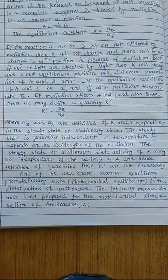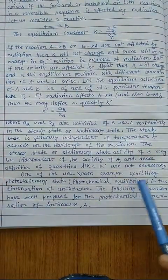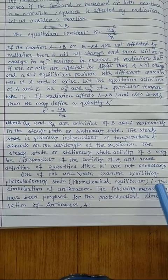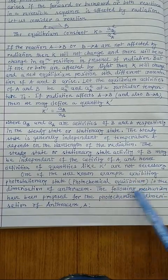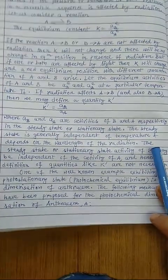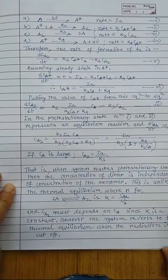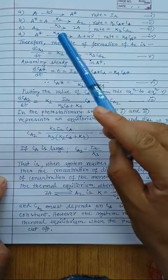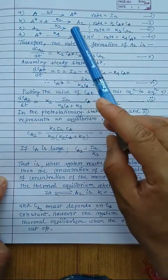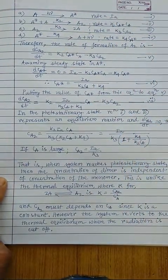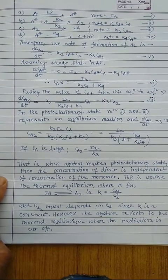One well-known example exhibiting the photostationary state is the photochemical dimerization of anthracene. When anthracene dimerizes in the presence of light, the photostationary state is easily arrived at. The following mechanism has been proposed for the photochemical dimerization of anthracene A. Here A is used for anthracene molecules. First, A absorbs light of a particular wavelength hν and forms the excited state anthracene A*, and the rate of this reaction is Iₐ because the quantum yield equals 1.